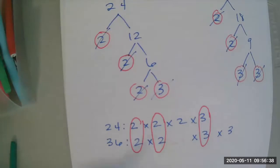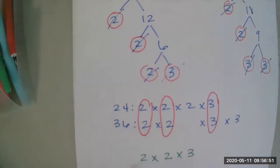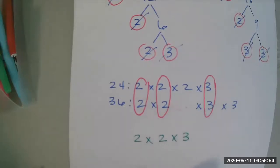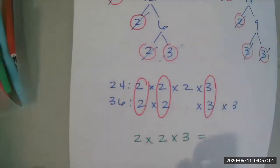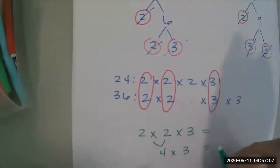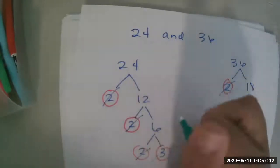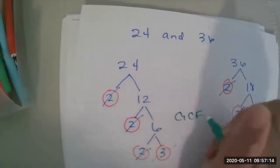So now what I'm going to do is I'm just going to look at my matches. So I have one match of 2. I have one match of 2 again. And I have one match of 3. And if I multiply these together, my matches, one match of 2, one match of 2, one match of 3, if I multiply them together, that will give you my GCF. So 2 times 2 is 4 times 3 is 12. So the GCF of 24 and 36 is 12.